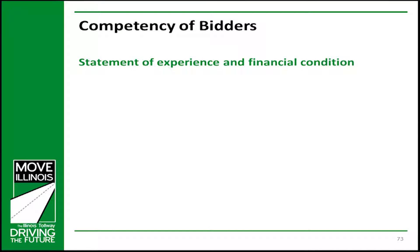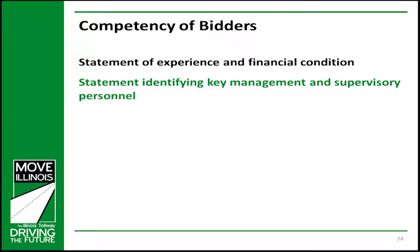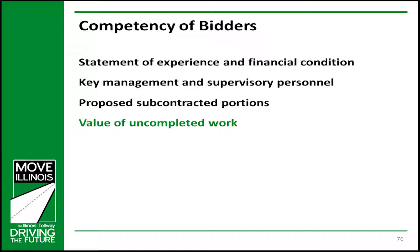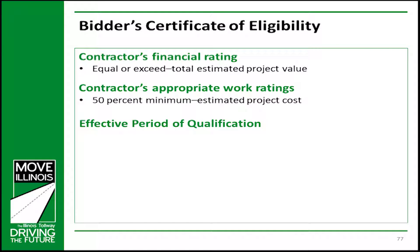Along with the proposal, each bidder must furnish the tollway with satisfactory evidence of its competency to perform the work. At a minimum, this shall include: a statement of experience and financial condition; a statement identifying key management and project supervisory personnel; and a statement regarding the type, amount, and condition of equipment that will be available for the work. You must identify the portion of the work that you, the bidder, propose to subcontract, including your DBE commitment in the submittal of the DBE Utilization Plan. You will also include a statement identifying the value of uncompleted work on your firm's committed contracts. IDOT issues certificates of eligibility to contractors indicating the contractor's financial rating, work ratings, and the effective period of prequalification.